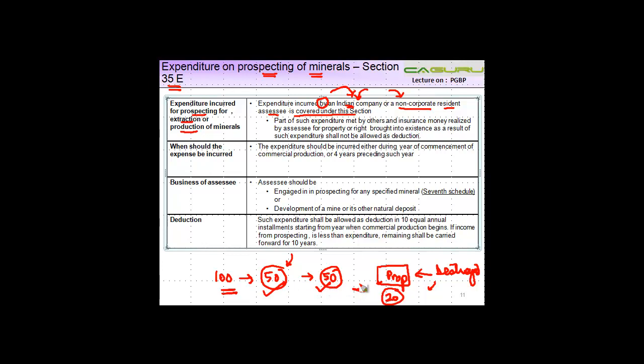And whatever money you realize by way of insurance through the property or right which was created as a result of this expenditure is also to be reduced. So you will have only rupees 30 as the deductible expenditure.